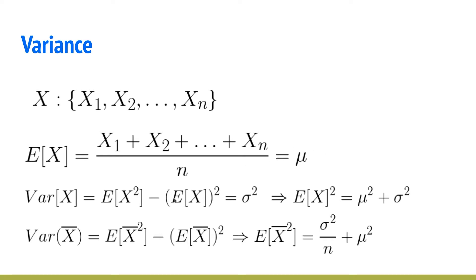The variance of x is E[x²] minus (E[x])², which equals the variance, which is the square of the standard deviation σ. So σ is referred to as the standard deviation.